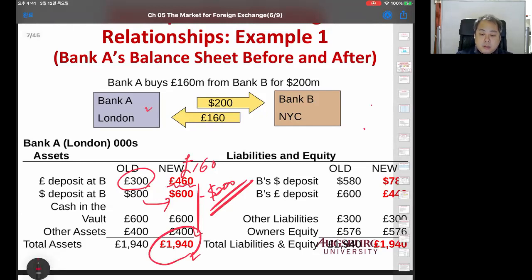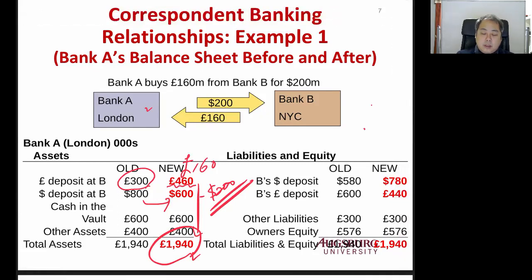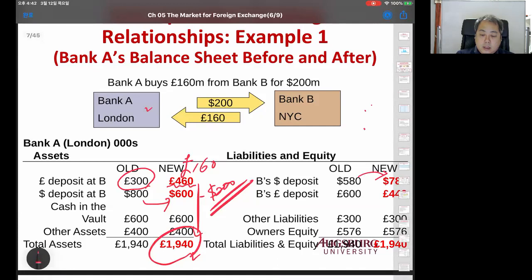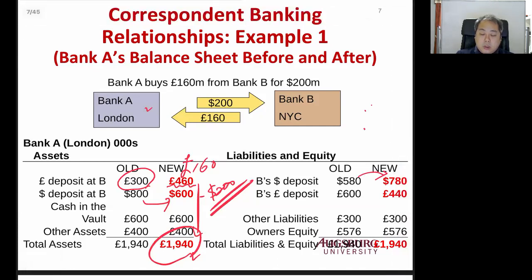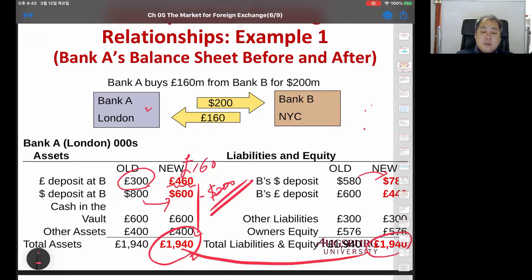Now in New York, on the liability side: Bank B's dollar liability increases by $200. And the pound deposit decreases by 160 pounds, so that total liability and equity equals total assets. That's the Bank A balance sheet before and after - you receive 160 pounds and pay $200, with liability increasing by $200 and pounds decreasing by 160 pounds, so assets and liabilities match.